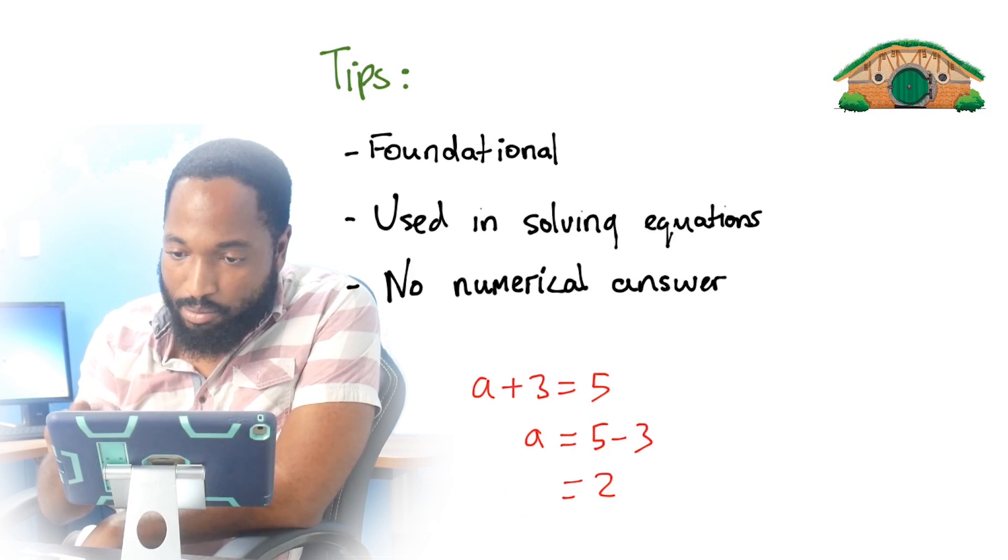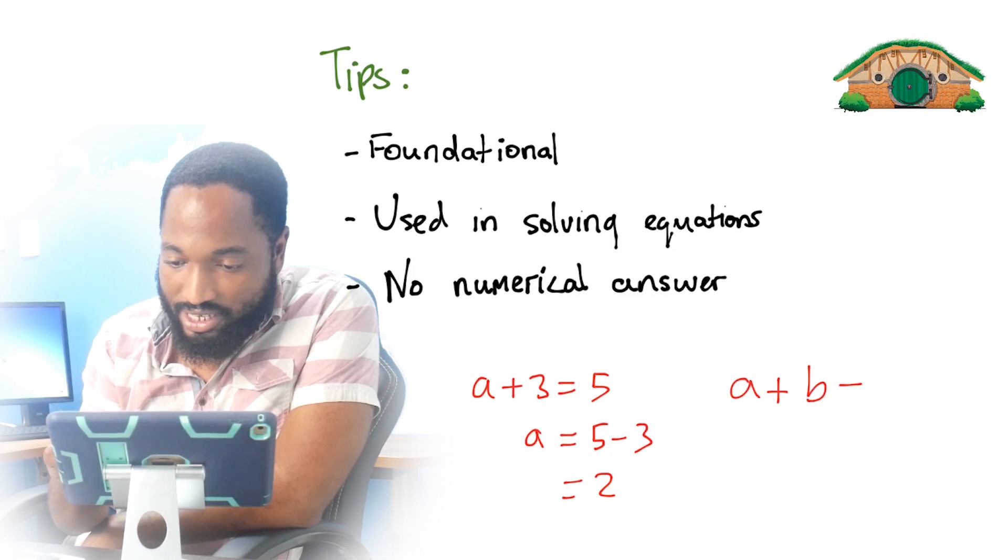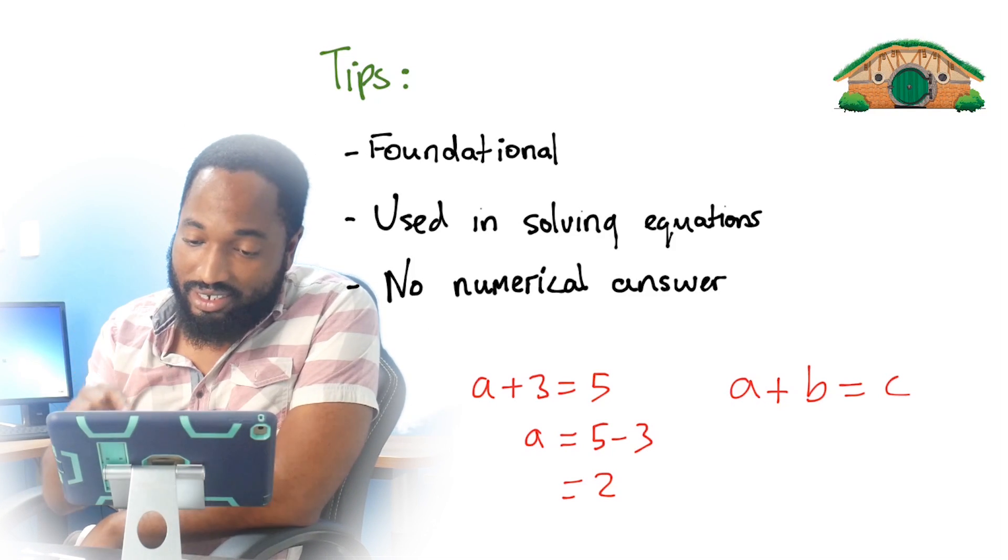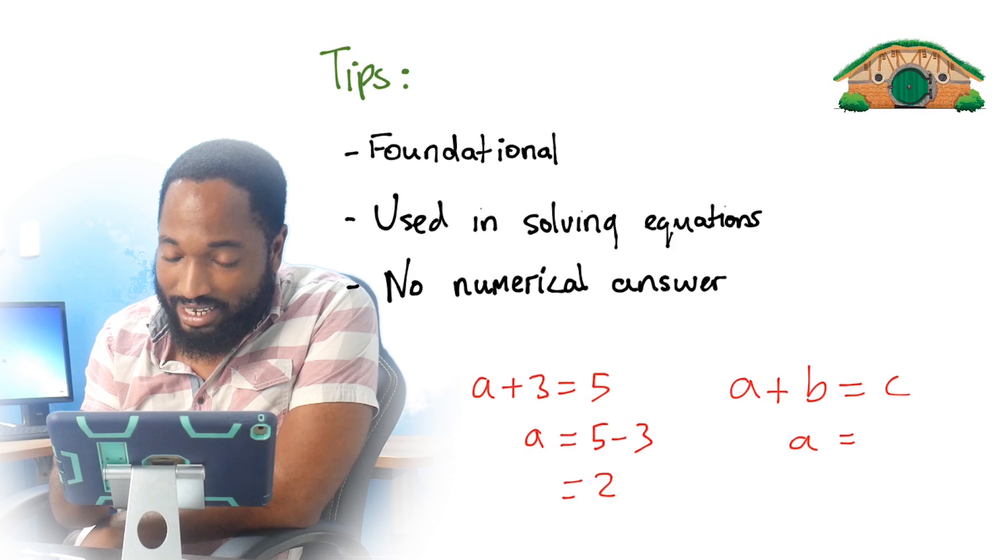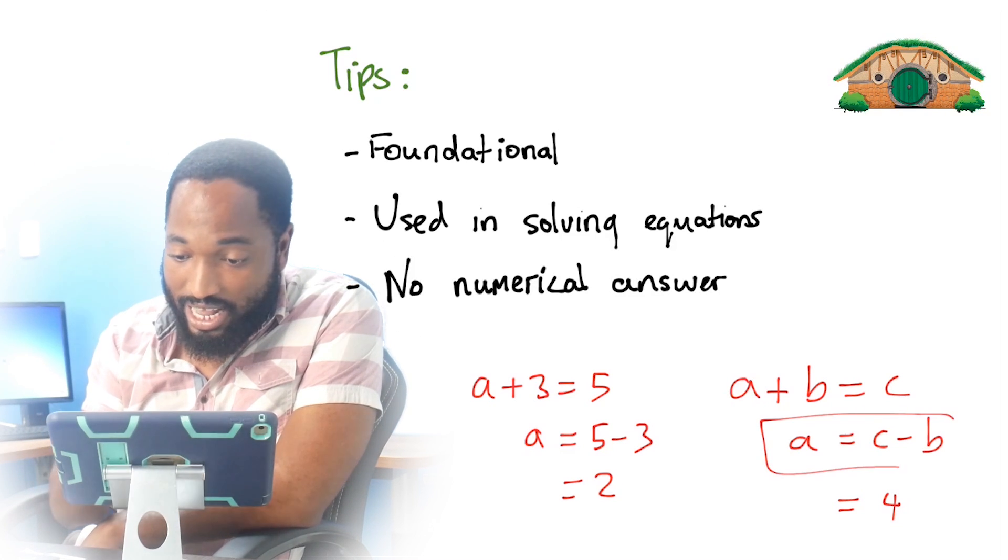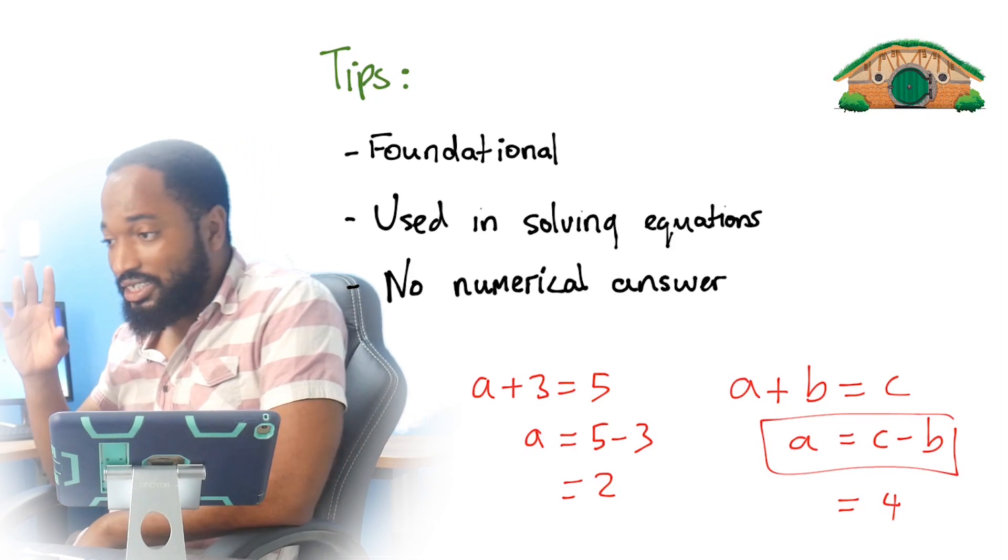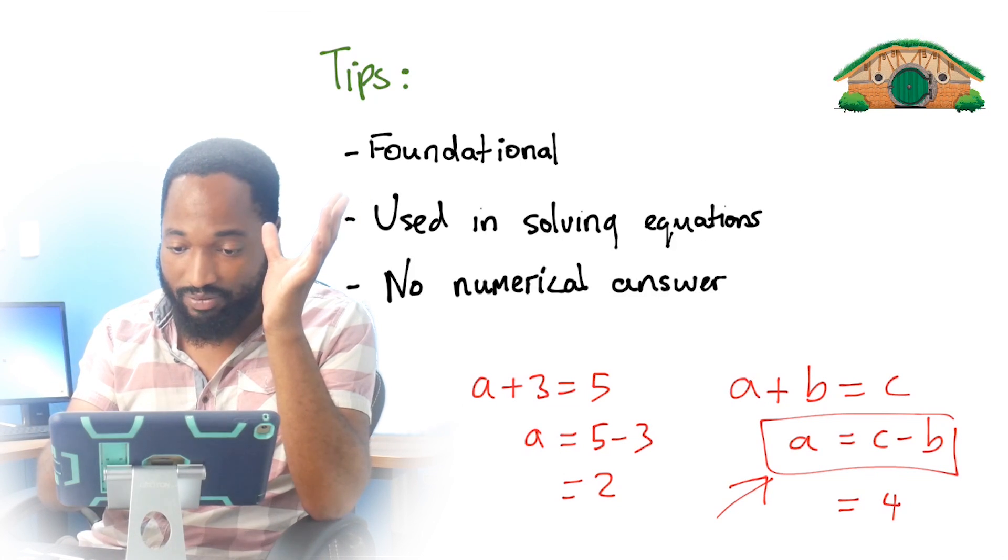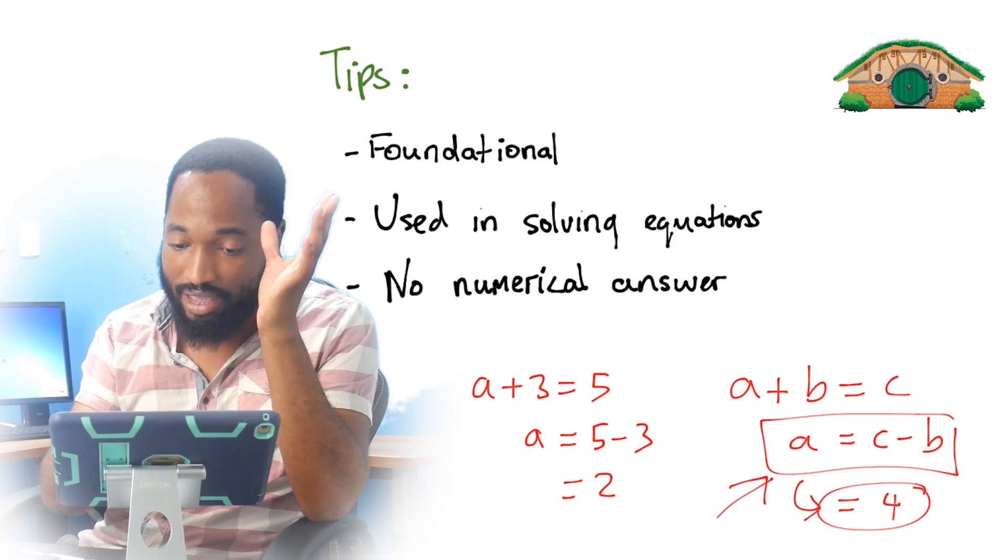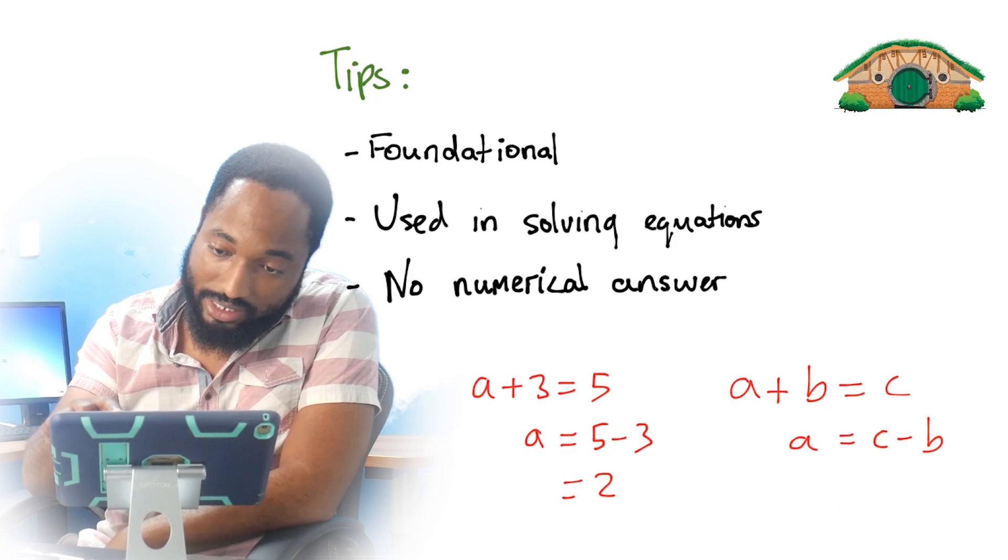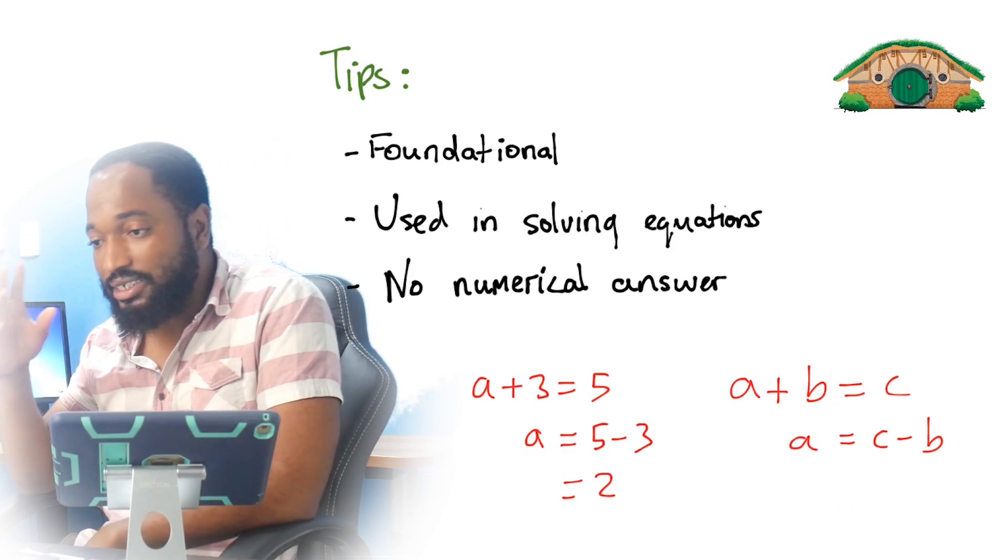But if I have A plus B equals C and I say make A the subject of the formula, people will always be trying to get an answer like, okay, they may do this step, but then they'll come and put an answer like 4 or something. Where you get a 4 from? So this is the answer right here. When you're finding the subject of the formula, it's perfectly okay to stop right here. Feel good about yourself there. If you start to go on here messing up your life, you're going to start to lose marks, right? A is not equal to 4. We don't know what A is. It's okay to stop with variables when they ask you to find the subject of the formula.